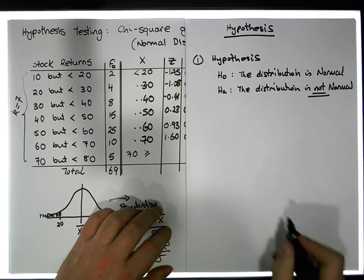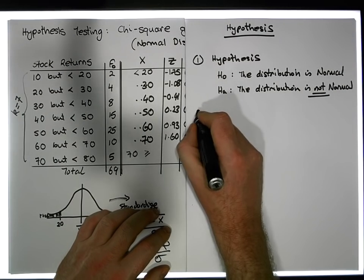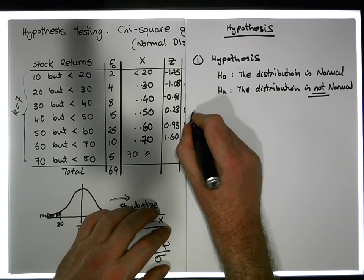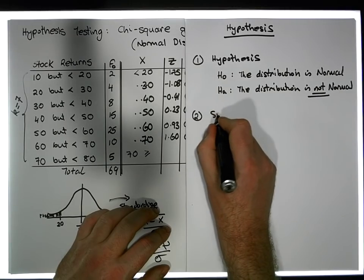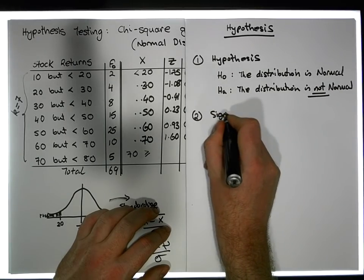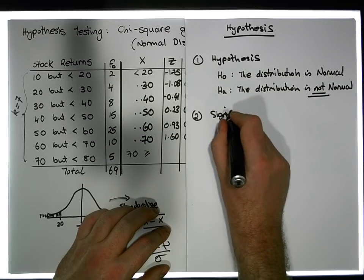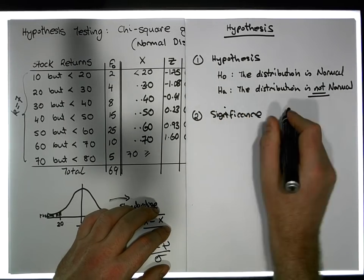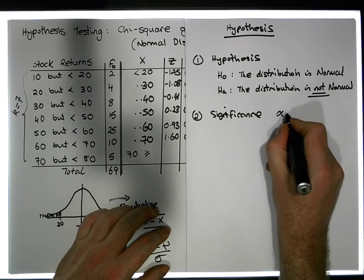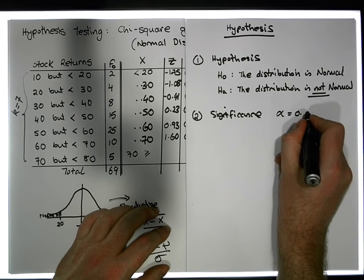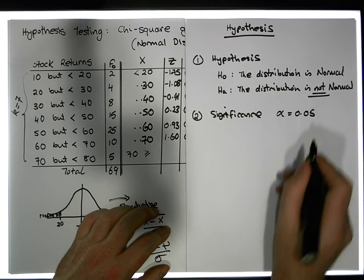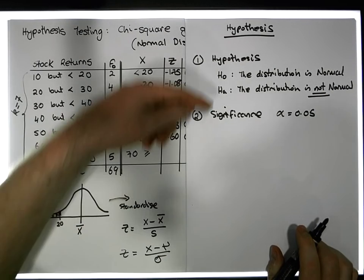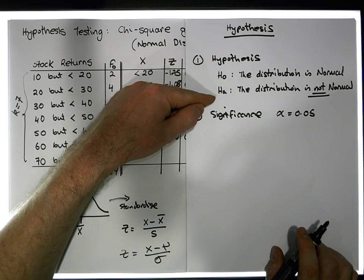Stage two is to define our significance level. We're going to set alpha to be equal to 0.05. In other words, if I do reject the null hypothesis, I'll only do it in—